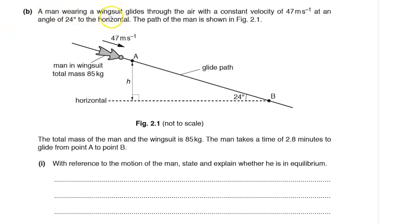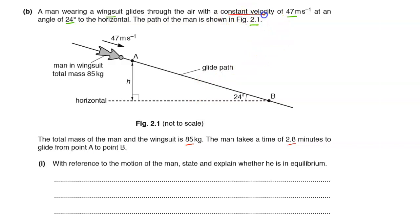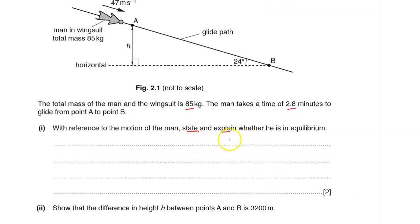Part B: A man wearing a wingsuit glides through the air at a constant velocity of 47 metres per second at an angle of 24 degrees to the horizontal. The path of the man is shown in figure 2.1. The total mass of the man and the wingsuit is 85 kg. The man takes 2.8 minutes to glide from point A to point B at constant velocity. State and explain two conditions relating to his motion.